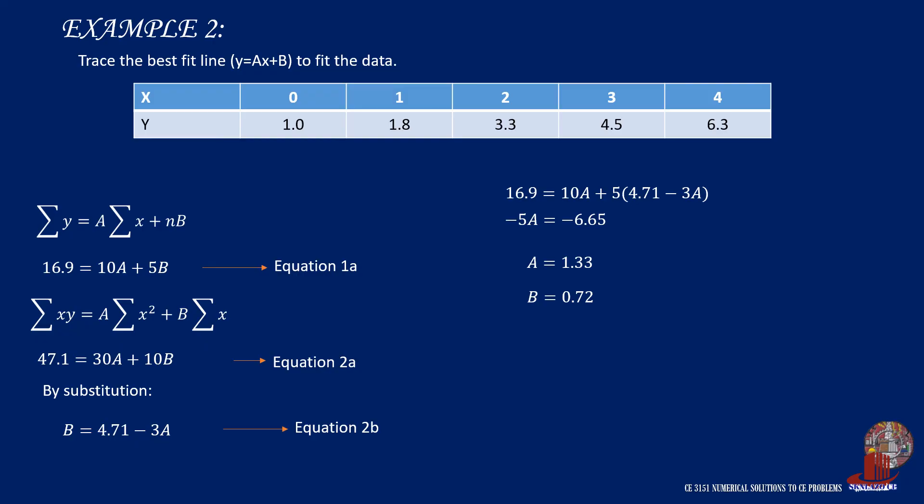So the function for the line to describe the dataset is f(x) equals 1.33x plus 0.72.